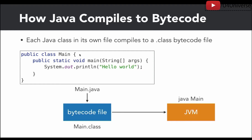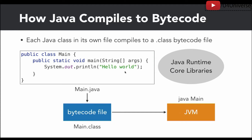The Java runtime core libraries — also known as the Java runtime engine or JRE — are basically installed on the user's computer. So when we have the Java runtime core libraries as dependencies, just the class code is sent to JVM. JVM uses the already-installed Java runtime core libraries. So basically, Java code is compiled to bytecode.